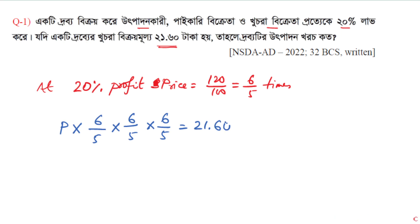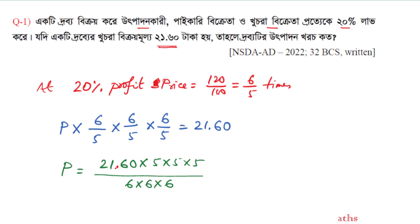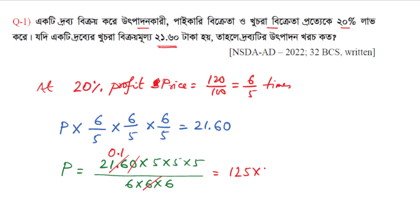So, assuming production cost is P, the final price equals P × (6/5) × (6/5) × (6/5) = 26 taka. Therefore P = 26 × (5/6)³ = 26 × (125/216). Calculating: 26 × 125 = 3250/216. Simplifying step by step: 125 × 0.1 = 12.5, and 12.5 × 0.1 gives approximately 12.5 taka as the production cost.